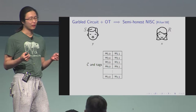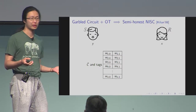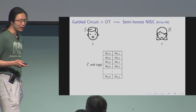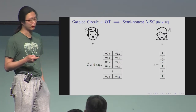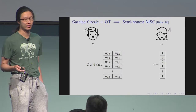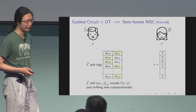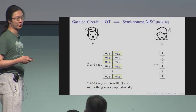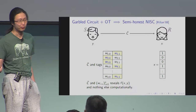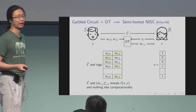For garbled circuit, for any input the sender has, the sender can compute the garbled circuit and also two tags for each input wire, such that if you also consider the receiver's input and give the receiver the garbled circuit and the corresponding input tags, they jointly reveal the output and nothing else computationally. This directly leads to an NISC protocol — let the sender send the garbled circuit in plain, and also use oblivious transfer to send one tag per input wire.